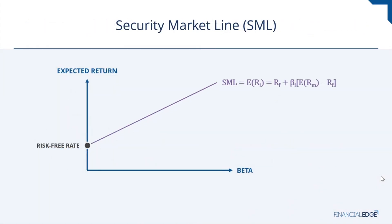The security market line is used by investors in evaluating a security for inclusion in an investment portfolio, in terms of whether it offers a favorable expected return against its level of risk. We plot the expected or required return against systematic risk, beta. It is important to understand that CAPM and the security market line, or SML, are functions that give an indication of what the return in the market should be given a certain level of risk. The actual return may be quite different from the expected return. When a security is plotted on the SML chart and appears above the SML, it is considered undervalued because it offers a greater return against its inherent risk.